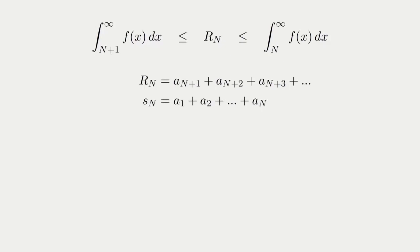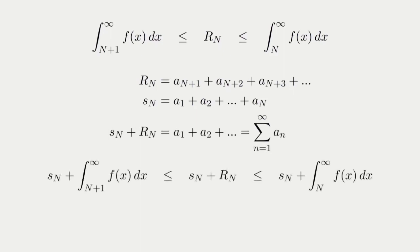Thus, the sum of both has to be the true sum, S. Therefore, I can convert these bounds on the remainder into bounds for the true sum of a series by simply adding the partial sum, S sub n, to all sides of the inequality.